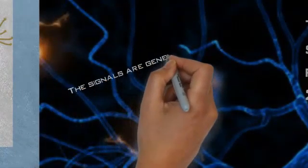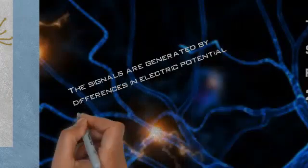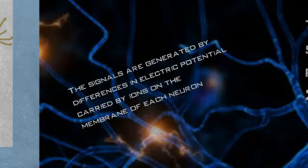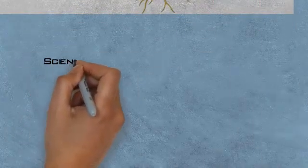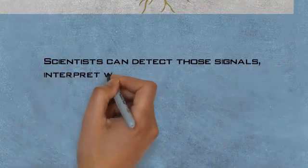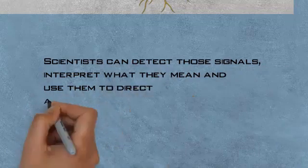These signals are generated due to the potential differences from one end to the other end of the neuron. Due to the potential differences, the charge flows from one neuron to another, which indicates there is some activity going on, and the brain detects that activity.